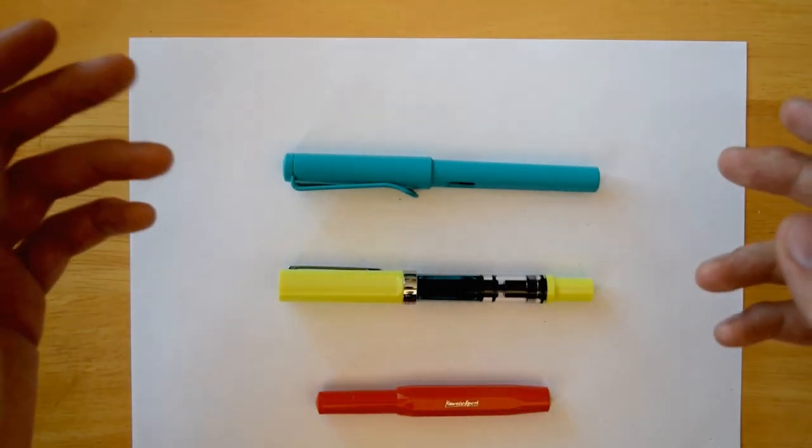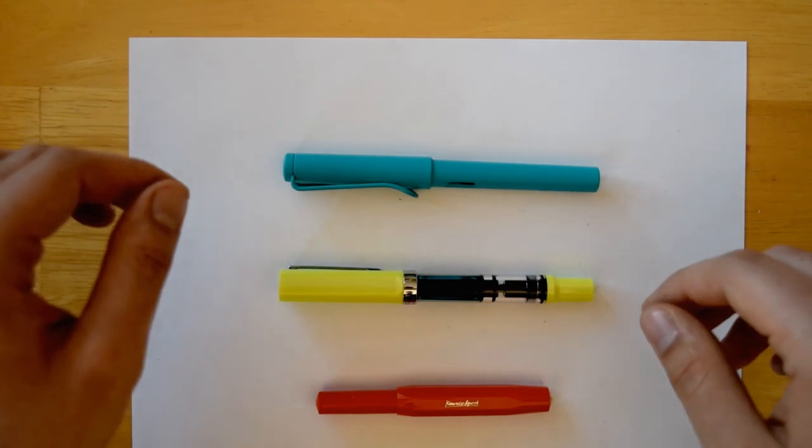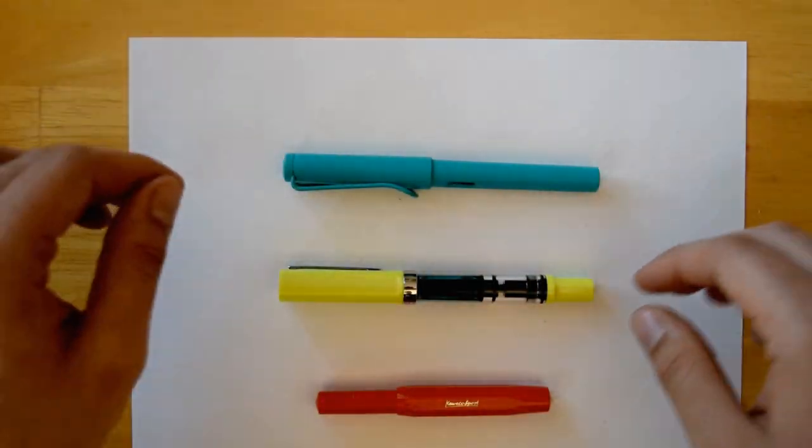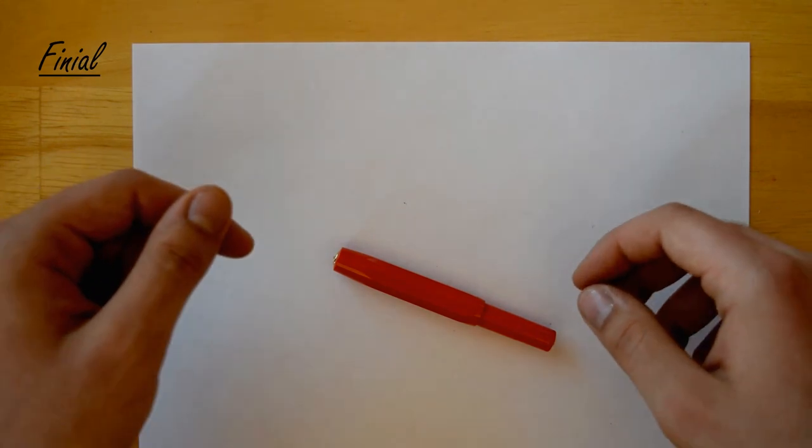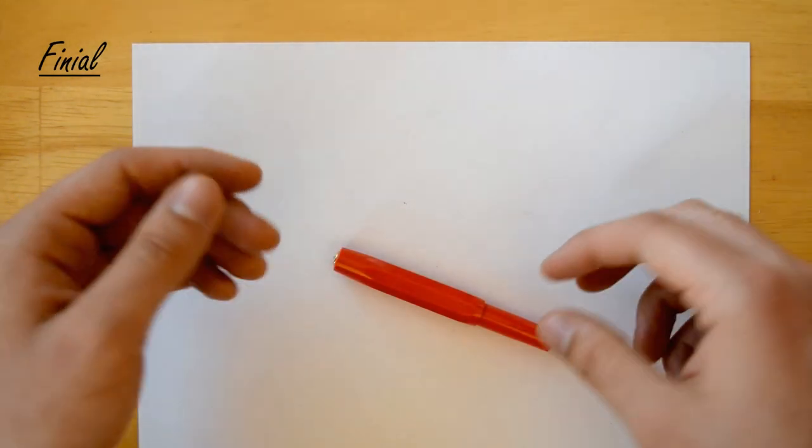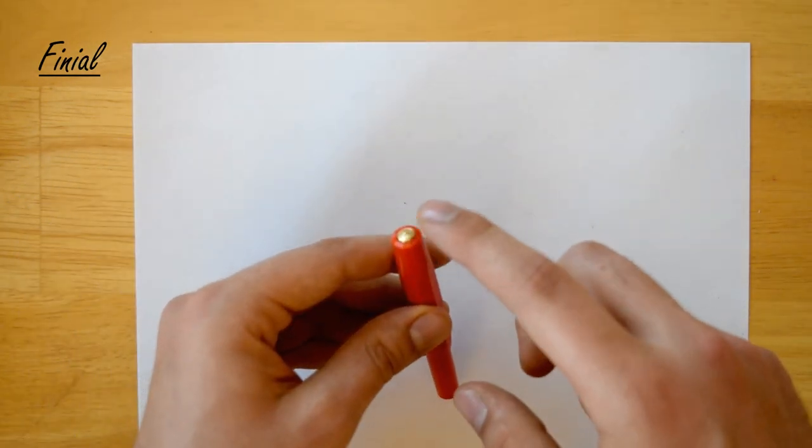There are also some other types of ink filling systems like vacuum and others, but these are the main ones. Let's say next up we have the finial of the pen.